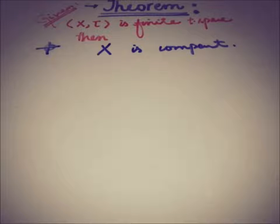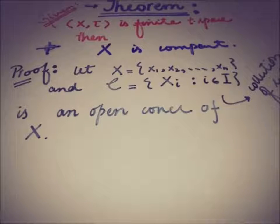So let's start the proof. Let x contain finite elements x1, x2, so on to xn, and let C be a collection of subsets of x containing some elements of that set x. Let C be an open cover of x. So this is our supposition here, that C is an open cover of x.